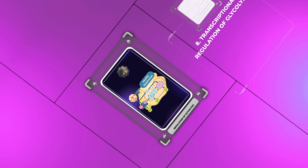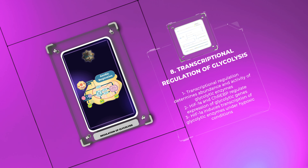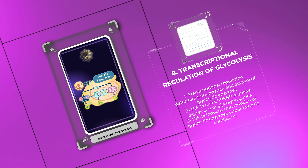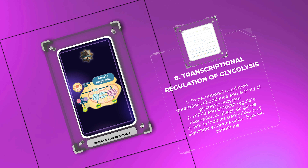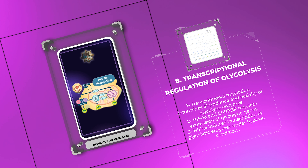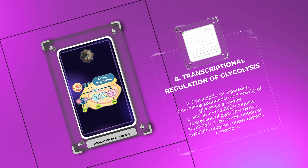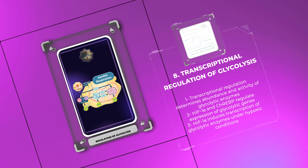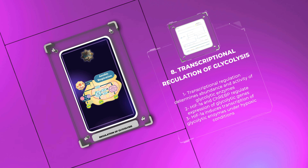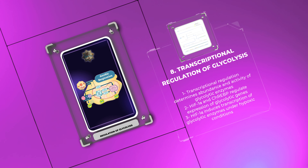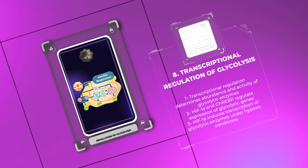Transcriptional regulation plays a vital role in determining the abundance and activity of glycolytic enzymes. Several transcription factors, such as hypoxia-inducible factor 1-α, HIF-1α, and carbohydrate-response element-binding protein, ChREBP, regulate the expression of glycolytic genes. For instance, HIF-1α induces the transcription of various glycolytic enzymes under hypoxic conditions, ensuring an adequate energy supply through anaerobic glycolysis.